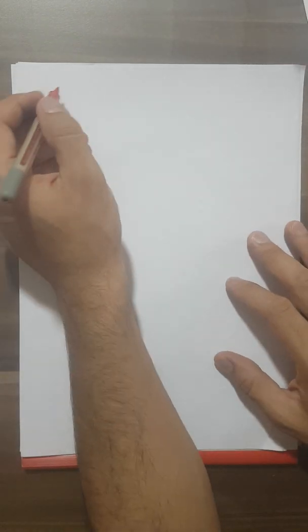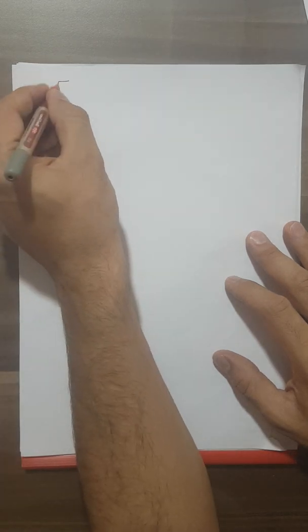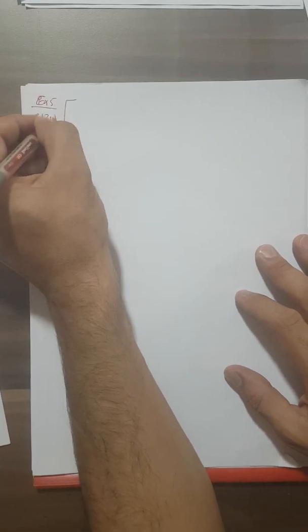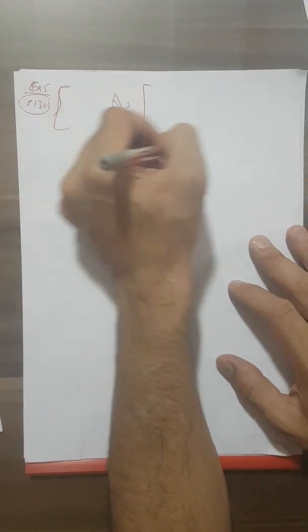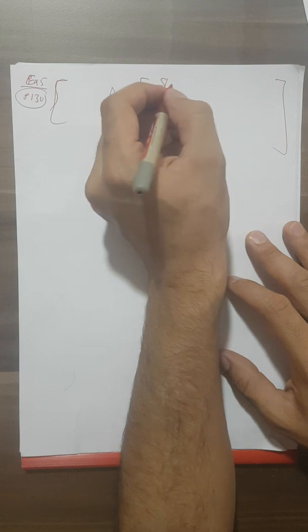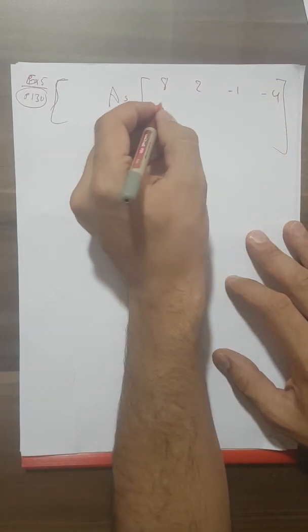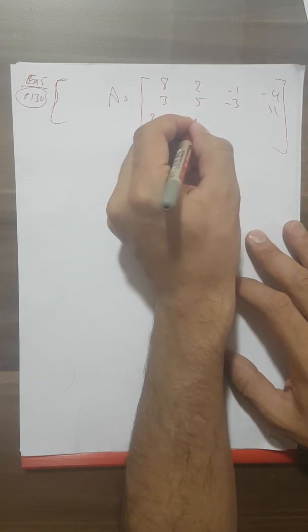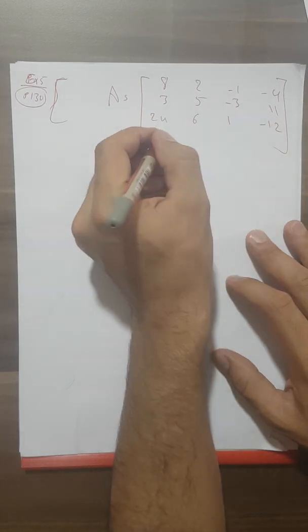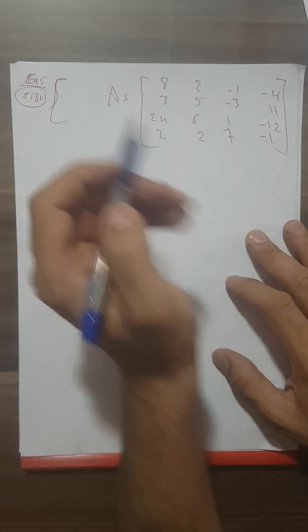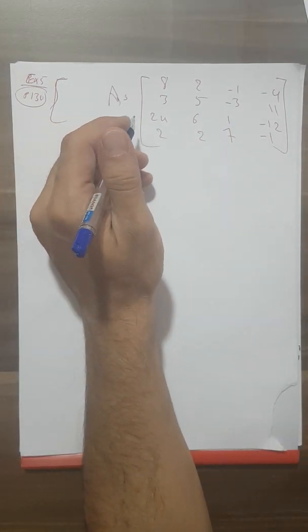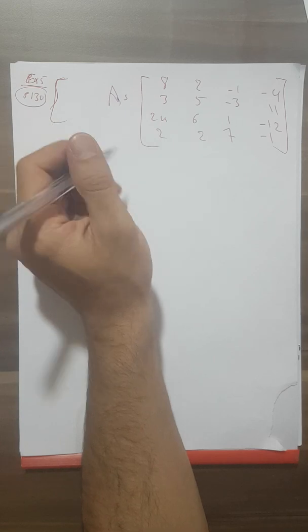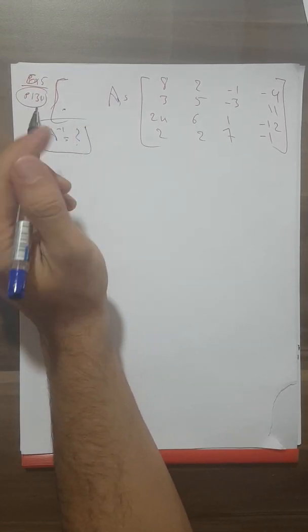Now, if you have a matrix like Example 5 on page 130, you need to be more careful. This is a 4×4 matrix: [2, -4, 3, 5; -3, 11, 24, 6; 1, -12, 2, 2; 7, -1, ...]. The question is: does A inverse exist or not? So we need to find the determinant of A.